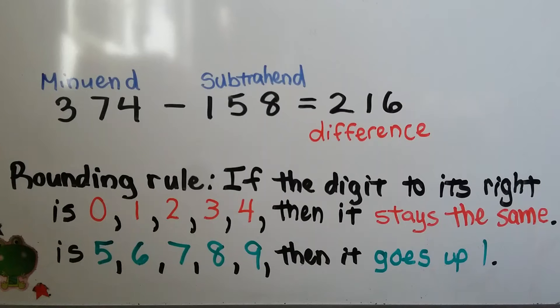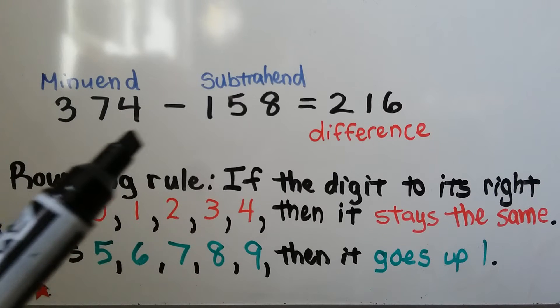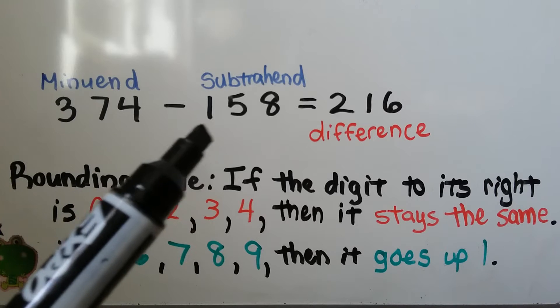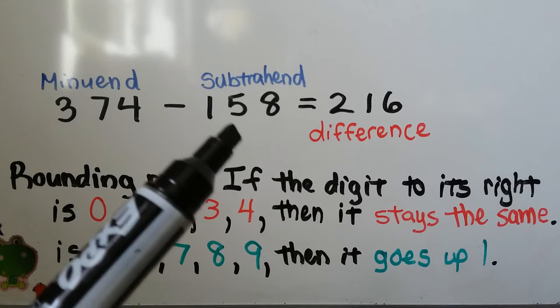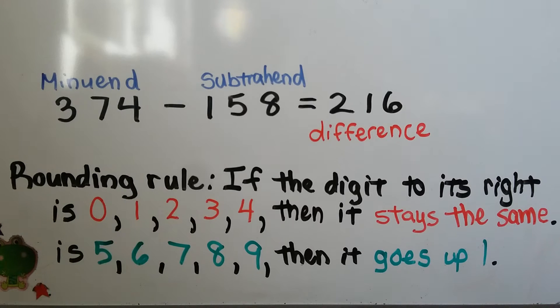Remember that this is the minuend in a subtraction sentence, and this is the subtrahend. Our answer is called the difference. And remember our rounding rule.